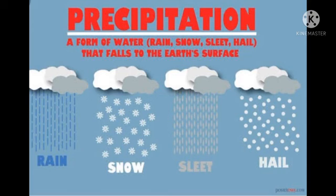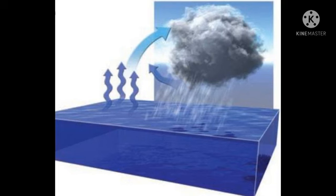Precipitation is any form of moisture which falls on the earth. When the water droplets in the clouds become large and heavy, they fall to the earth under the force of gravity. This is called precipitation.